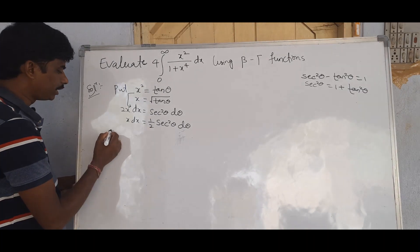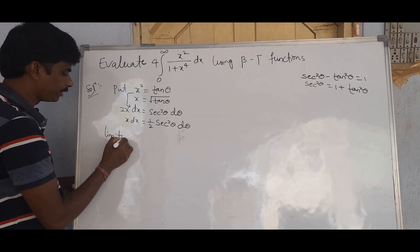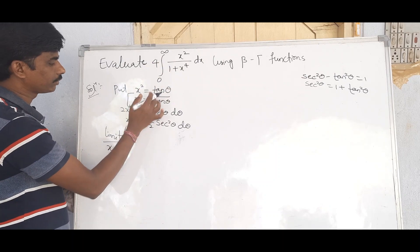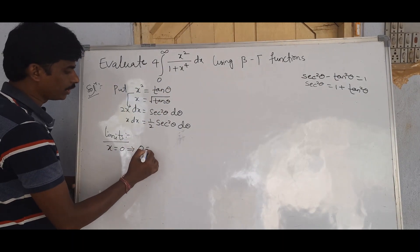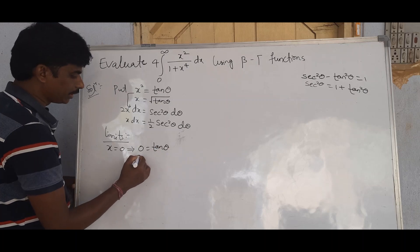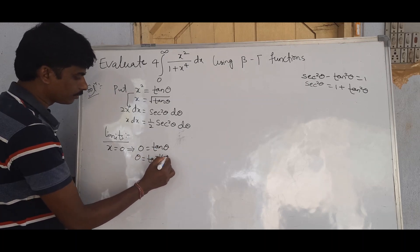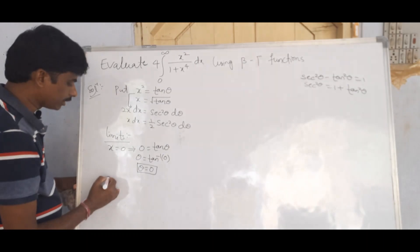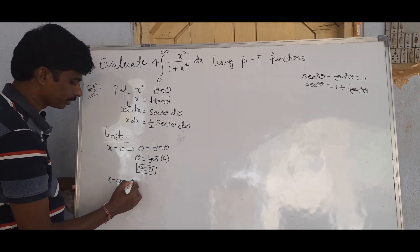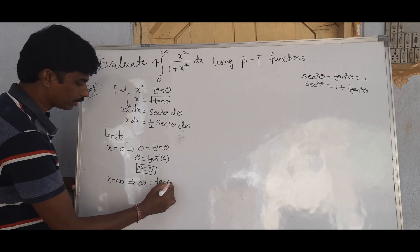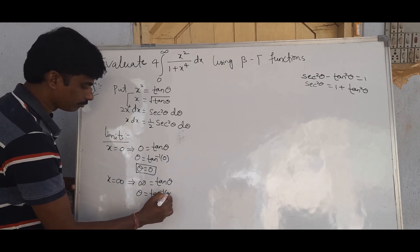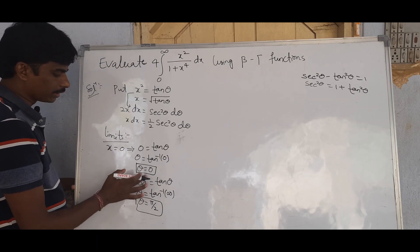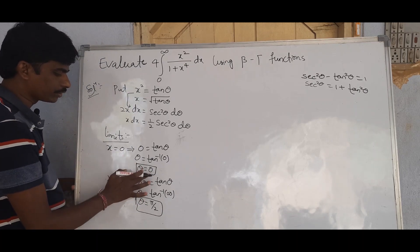Now for the limits: when x = 0, substituting gives tan θ = 0, so θ = 0. When x = ∞, tan θ = ∞, so θ = π/2. The limits transform from [0, ∞] to [0, π/2].